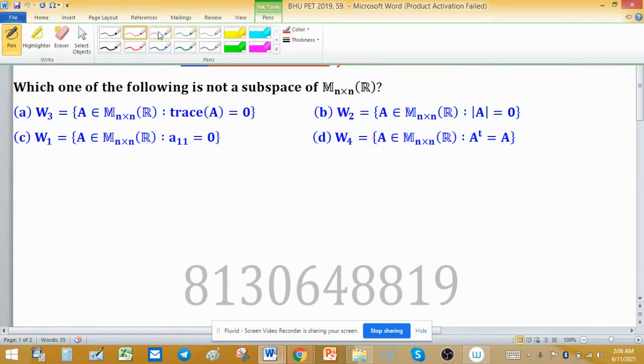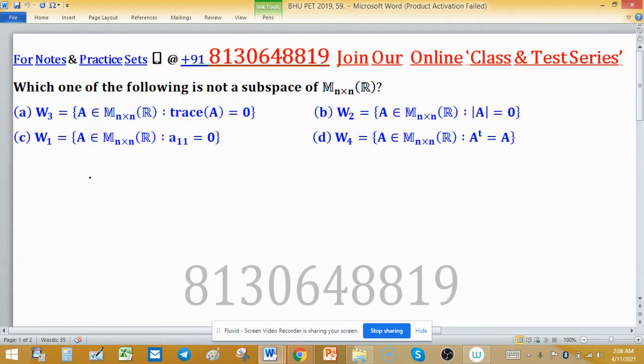We test these options one by one to reach the final answer. For option A, W₃ where trace of A is zero: if W₃ forms a subspace, then it will follow all three properties of the subspace test.